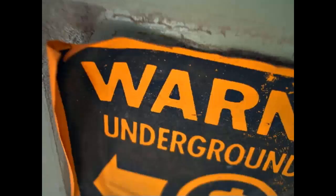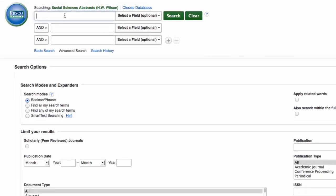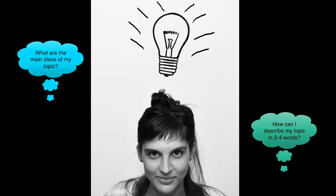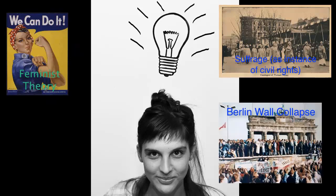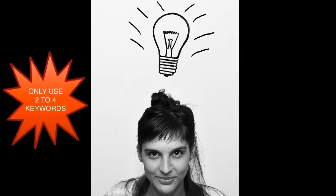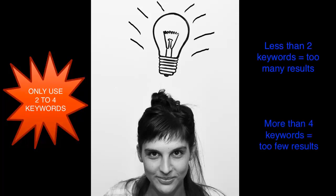Not all databases look the same, but you're in luck, since most of them have pretty similar functions. First, there's the keyword search. What is a keyword? Keywords are the main ideas. You can generate them by breaking up your research question into smaller chunks. They can take many forms, such as a theory, an event, an instance, a phrase, or a concept. You should only ever search for two to four keywords, though. Less than two or more than four will result in far too many, or not nearly enough, results.